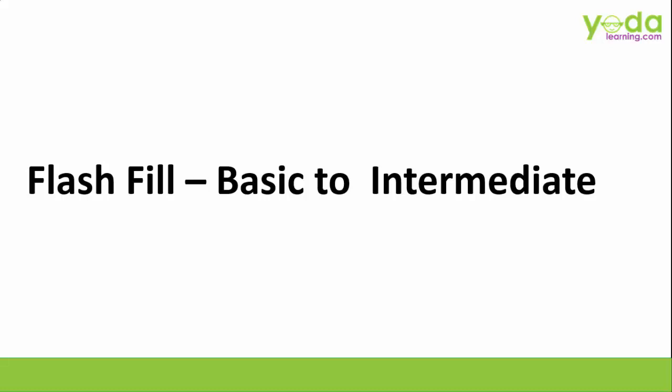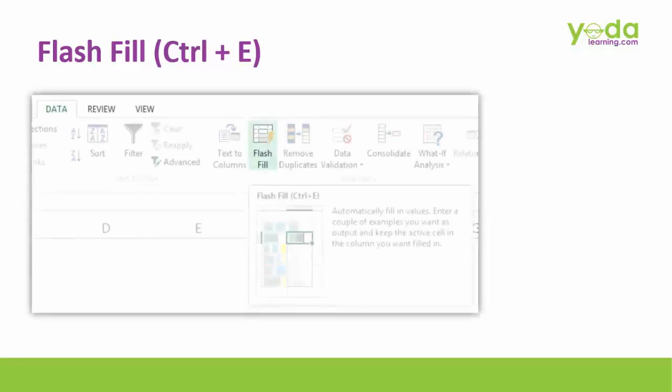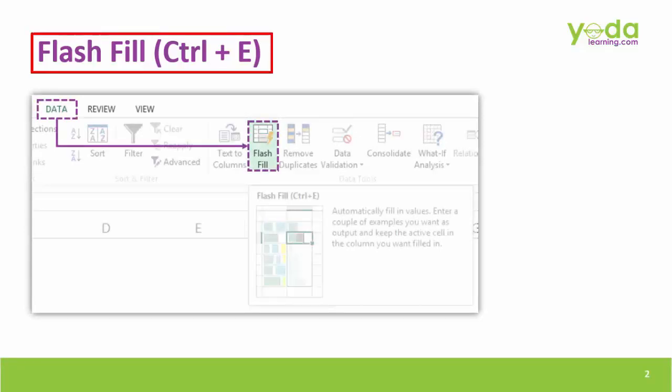Hello and welcome everybody to our video on Flash Fill, where we will take basic to intermediate examples. Flash Fill is a feature that was introduced in Excel version 2013. You can find it under the data tab right beside Text to Columns. The shortcut key is Ctrl E.